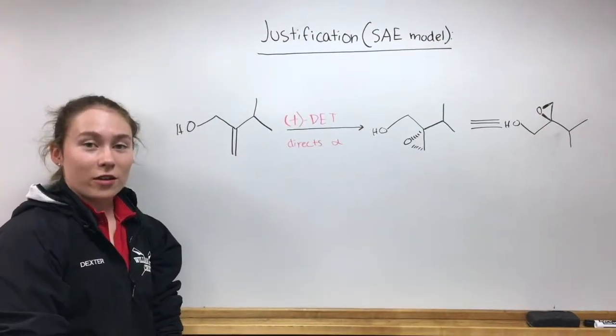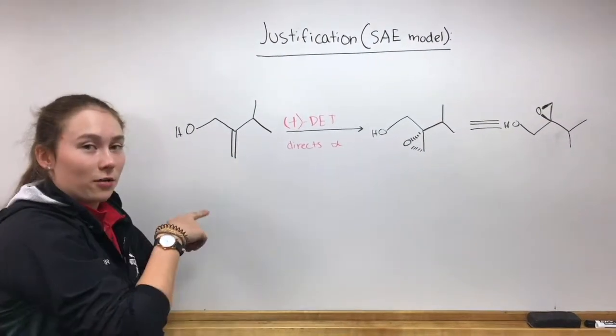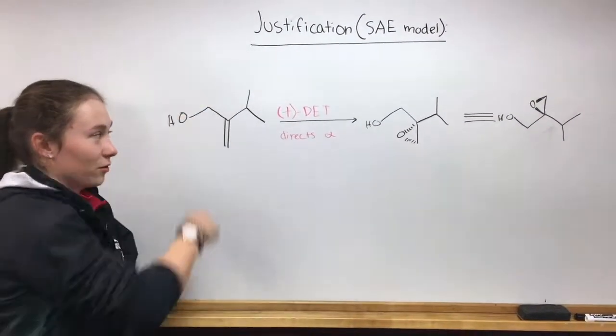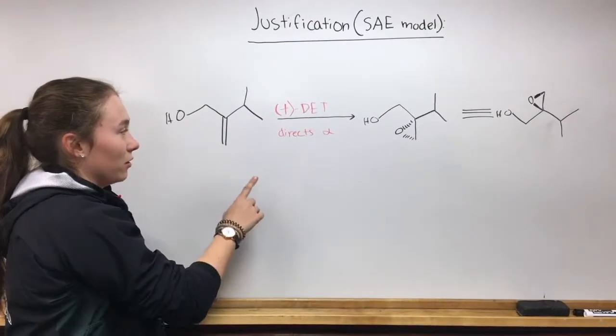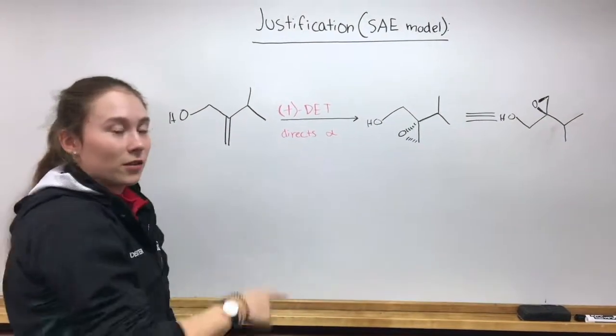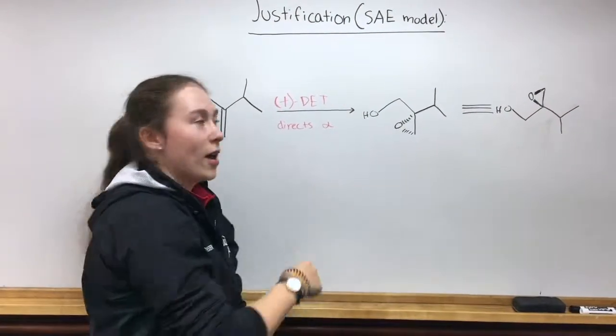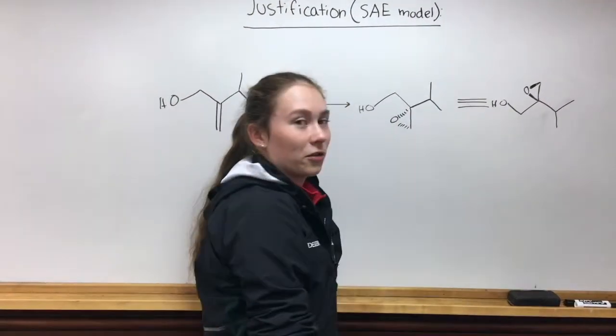Using the SAE model, we reconfigure the starting material to have the alcohol pointing in the northwest direction. Since we have plus DET, that will direct the epoxide to be on the alpha face. We see that in the product here, and this can be reconfigured into the product we see in the literature example.